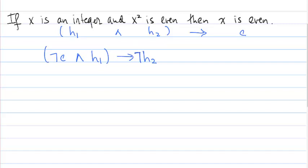Sorry, we need a negation here for h₂. So if we assume that not c and h₁, then that implies not h₂. So let's write this out now in English.